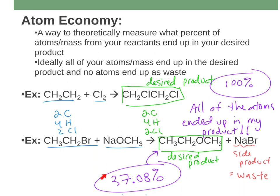You might be asking where did the 37.08% come from — how do you get there? That's what we'll talk about next. In the first example, all of the atoms ended up in the product, which is why it's 100% atom economy — that's exactly what you're going for. In the second example, only 37% of all of that mass ended up in the product, so that is a less atom economical reaction.